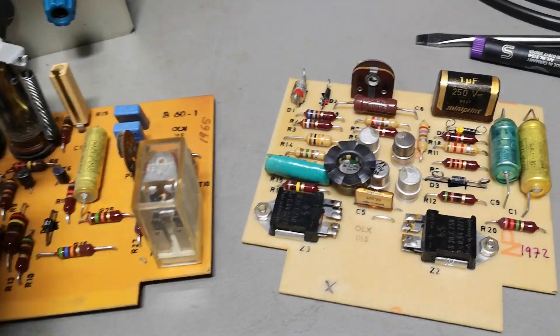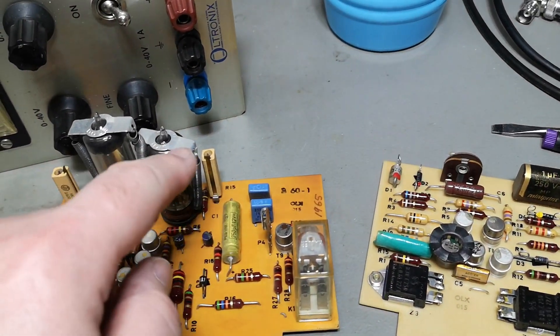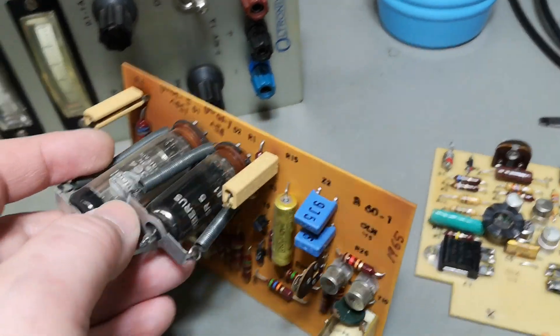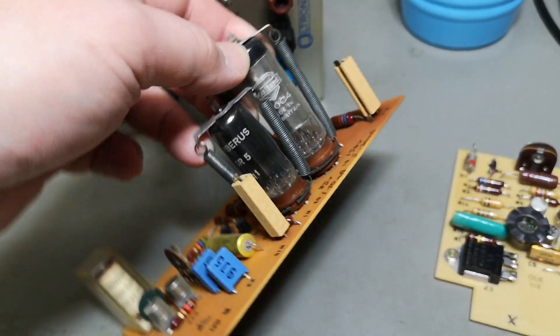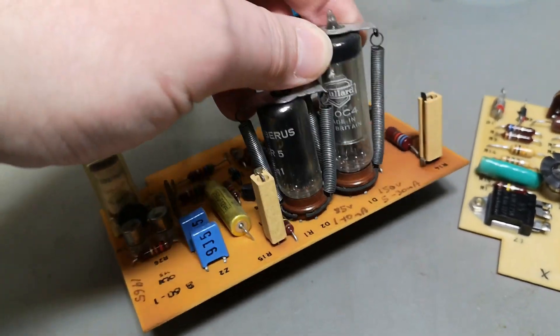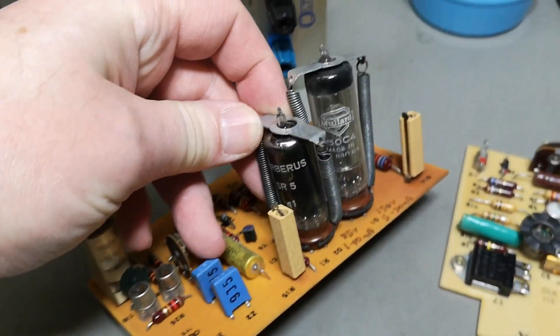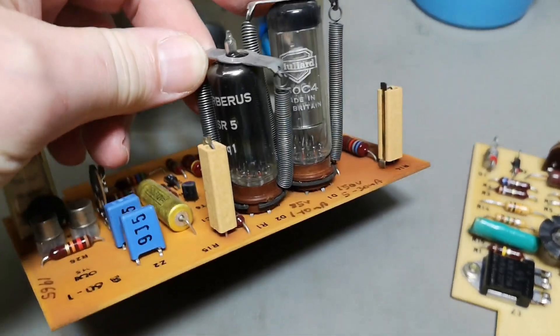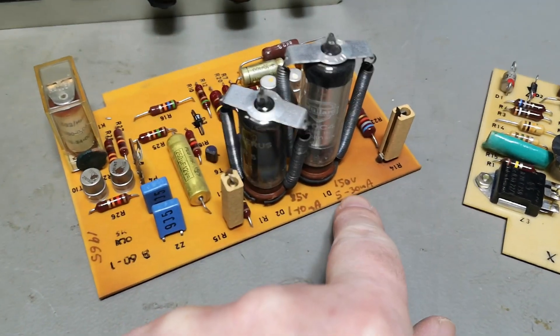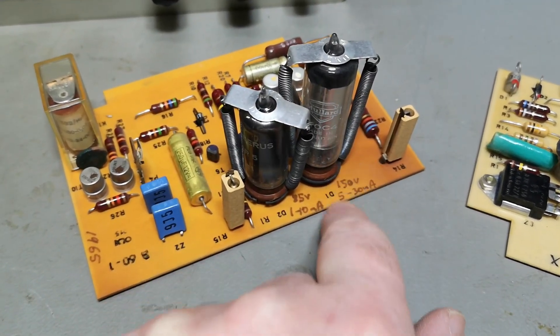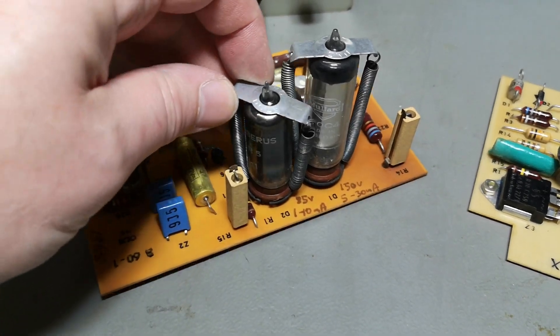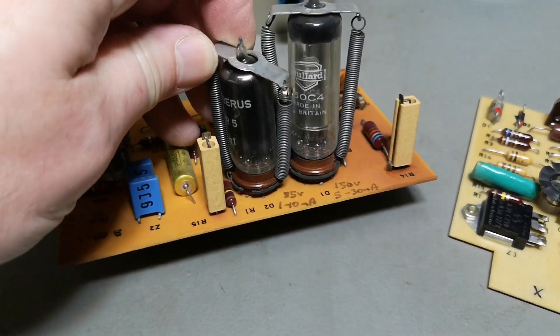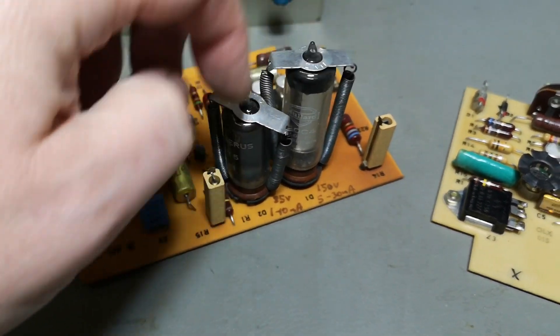In the good old days, yeah, they use tubes. So this one is a 150C4, so this is a 150 volts 5 to 30 milliamps voltage regulator tube. And the SR5 is 85 volts 1 to 10 milliamp voltage regulator tube.